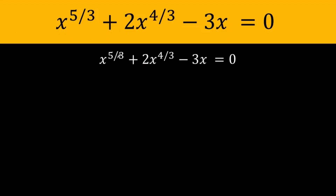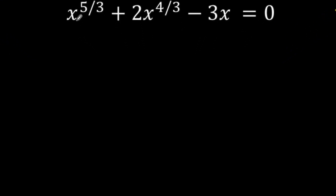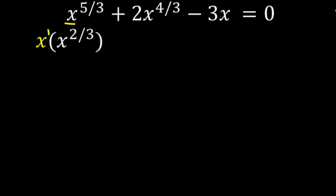Notice that we have here an improper fraction 5 over 3, which can be written as a mixed number — 5 over 3 is equal to 1 and 2 thirds. Also, this fractional exponent 4 over 3 can be written as a mixed number 1 and 1 third. Because of this, x raised to 5 over 3 can be written as x times x raised to 2 over 3, since the exponent of x is implied to be 1. When we multiply exponential numbers with the same base, we copy the common base x and add the exponents: 1 plus 2 thirds equals 5 over 3. So I am rewriting x raised to 5 over 3 into factors x and x raised to 2 thirds, applying the converse of law of exponents: given the product, we can split them into two factors.